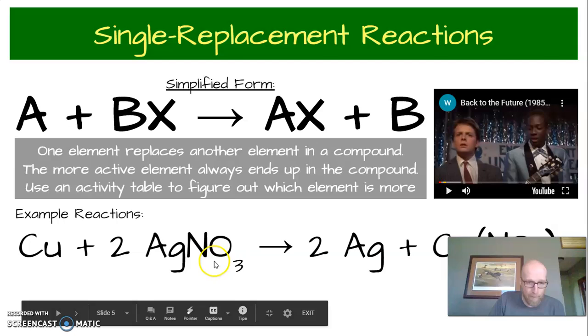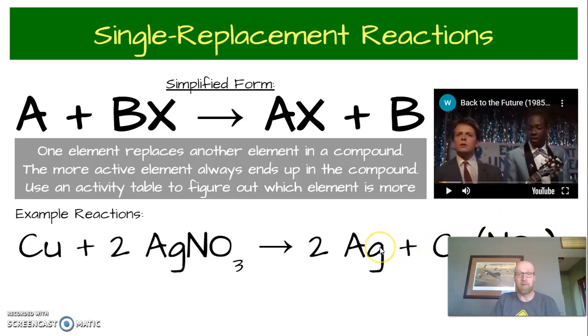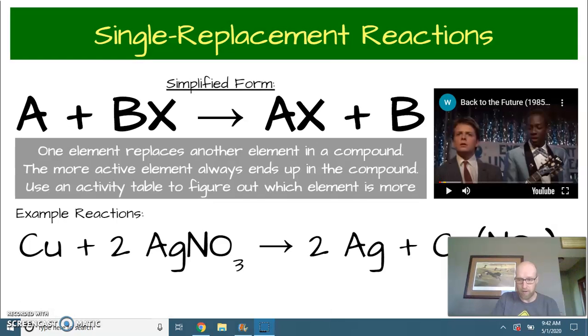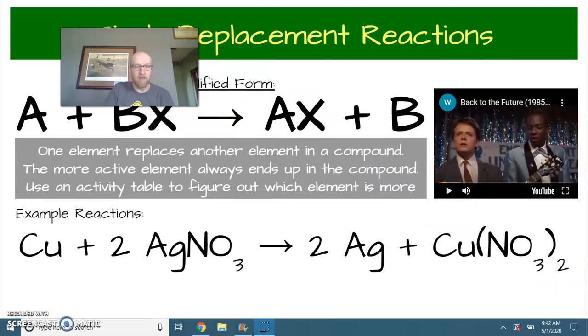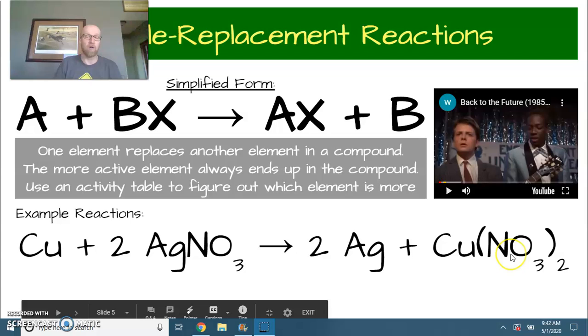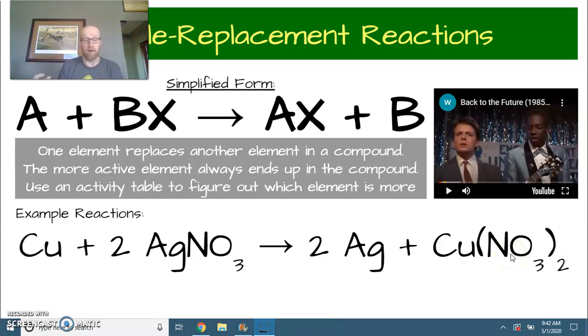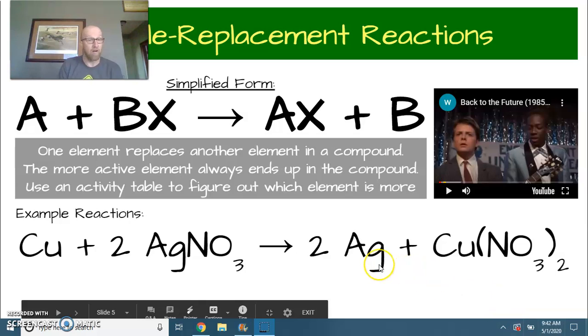But in any case, this is a single replacement reaction. So here we have this compound silver nitrate and copper is going to come and cut in and make copper two nitrate over here and leave silver by itself. This copper two nitrate is going to be the new compound that is formed and silver is left by itself.